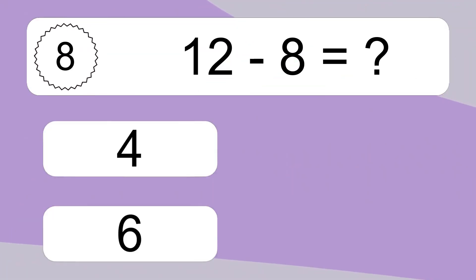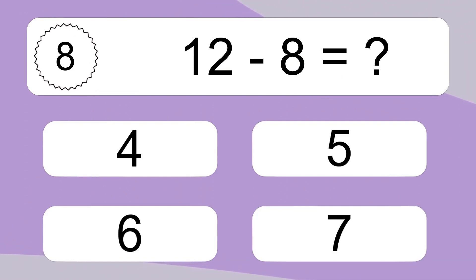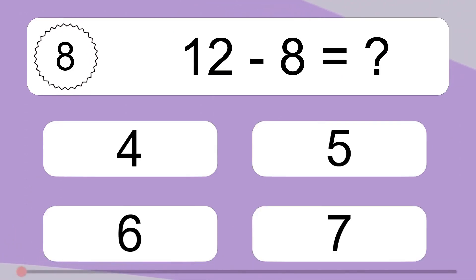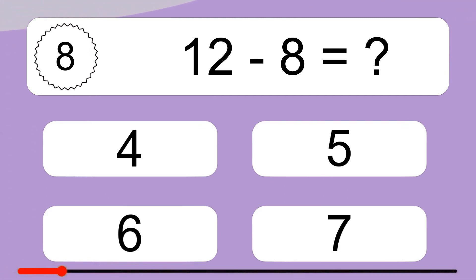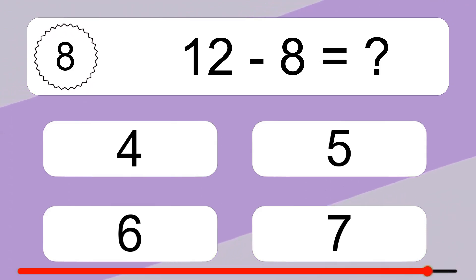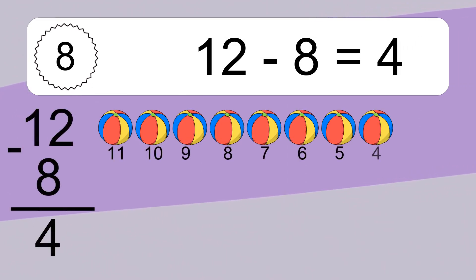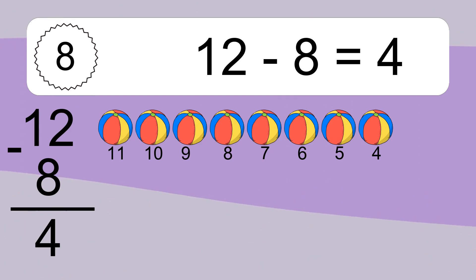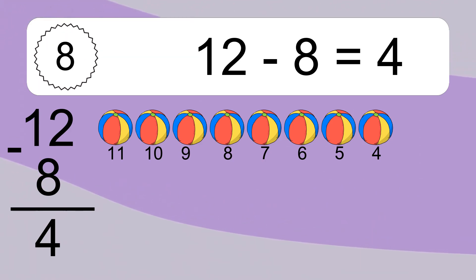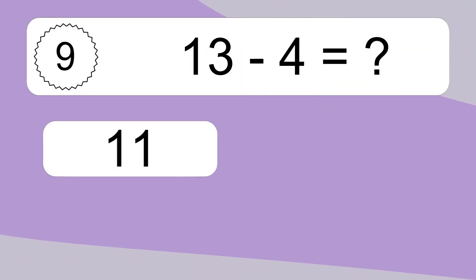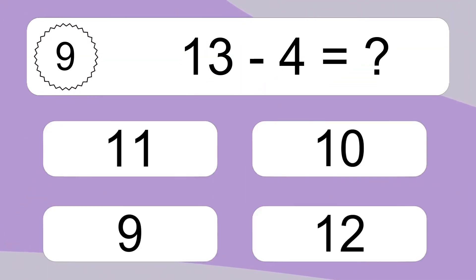12 minus 8 equals what? 12 minus 8 equals 4. Let's count it: 11, 10, 9, 8, 7, 6, 5, 4.